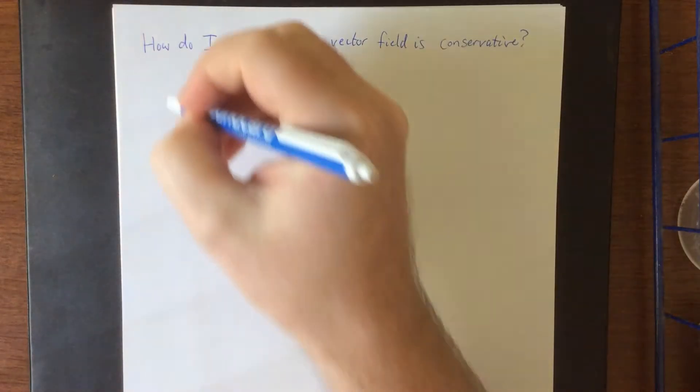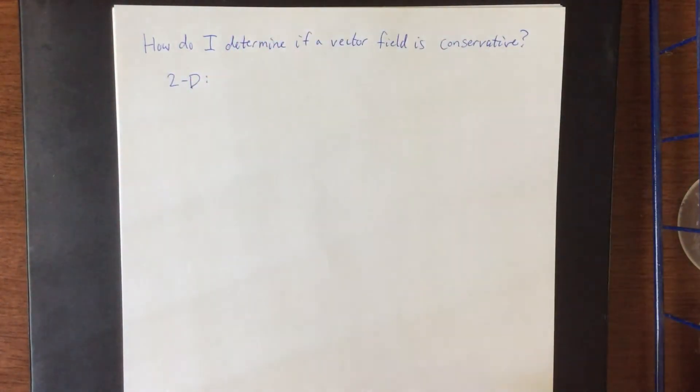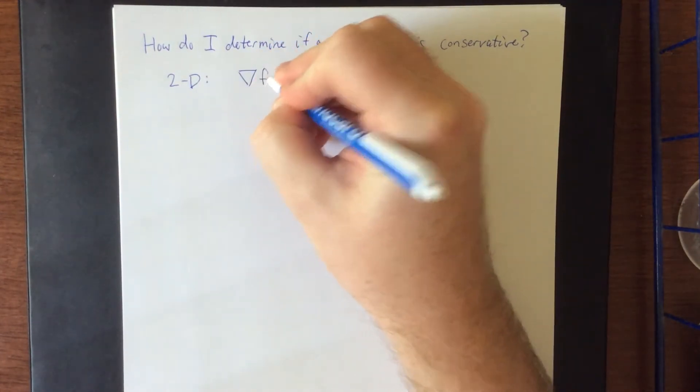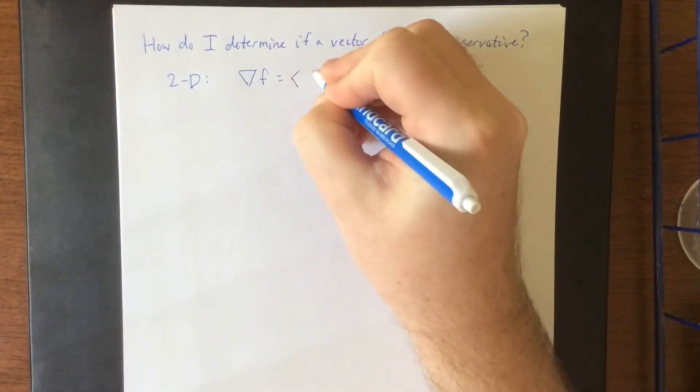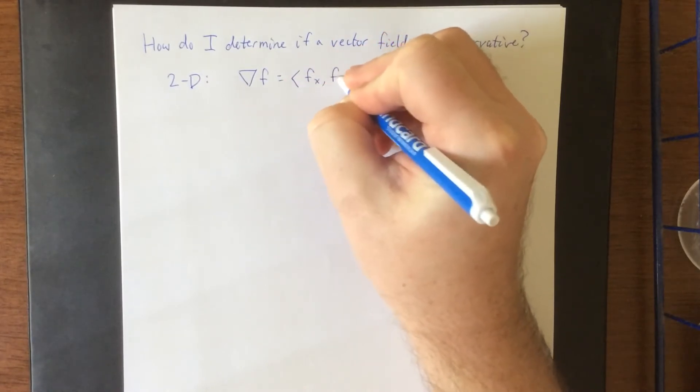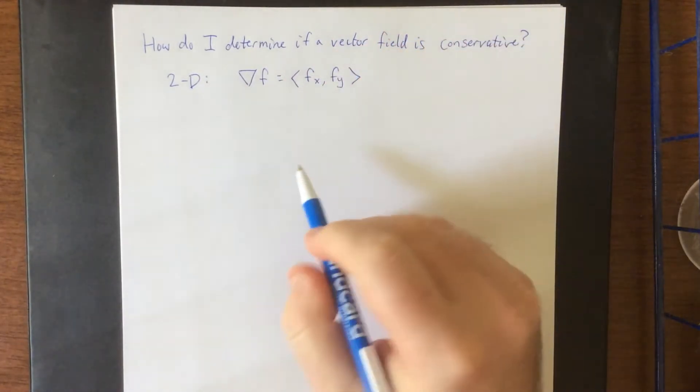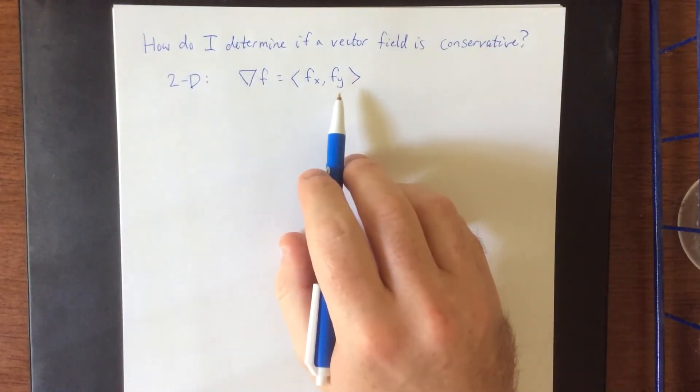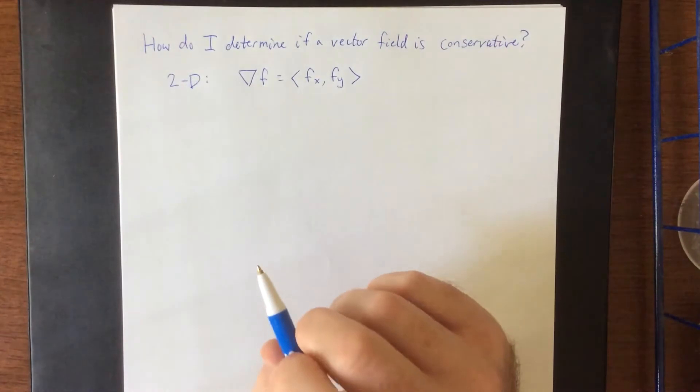Well we're going to start with the two-dimensional case. Now a vector field is conservative if there exists a potential function or a generating function for it. So it'll be true that the first component will be the partial derivative of f with respect to x, and the second component will be the partial derivative of f with respect to y.